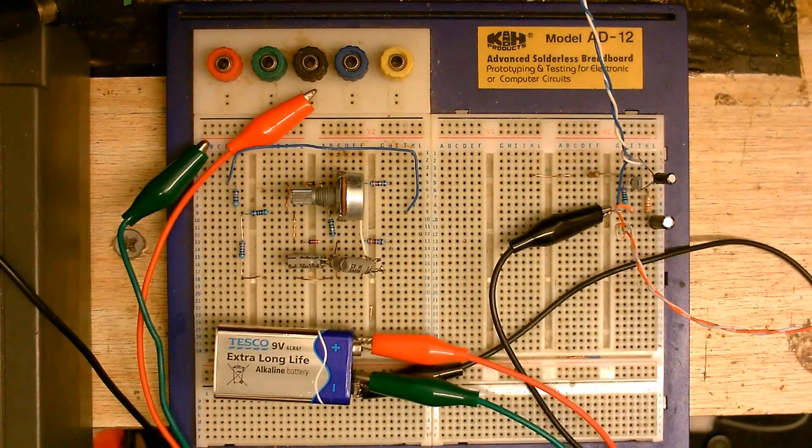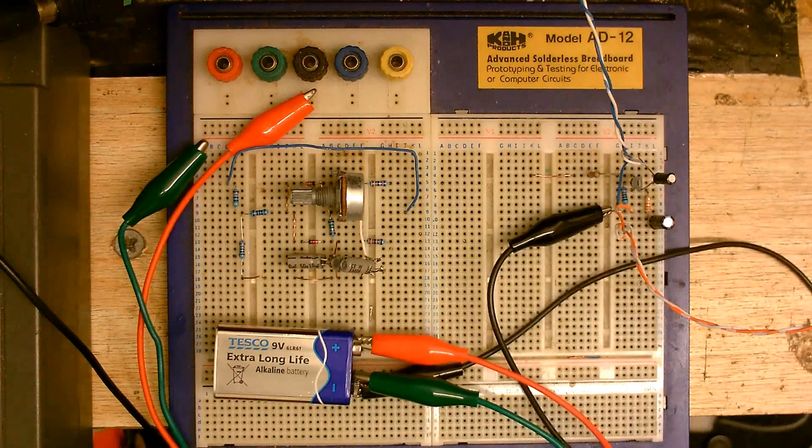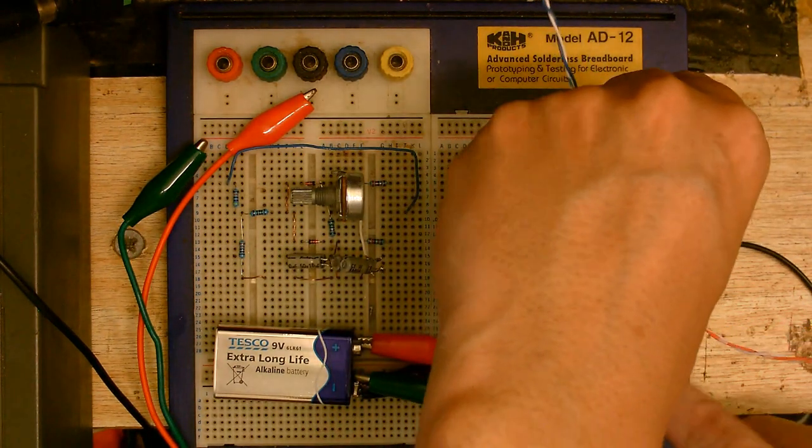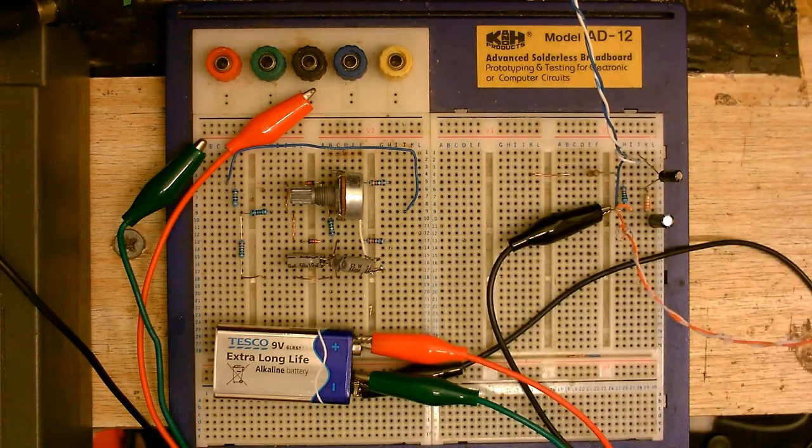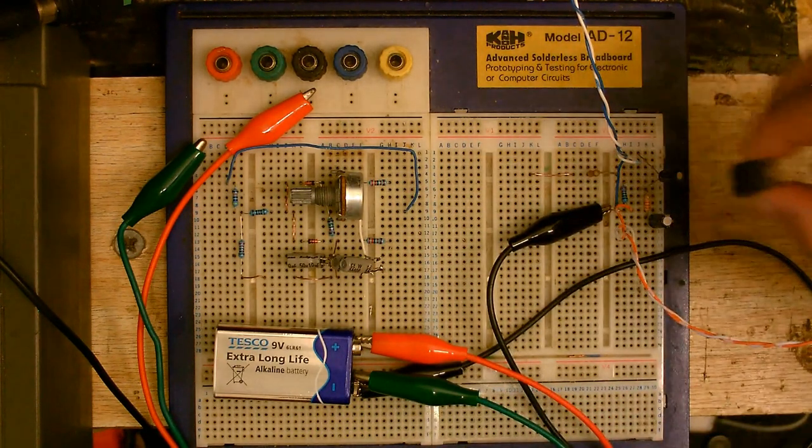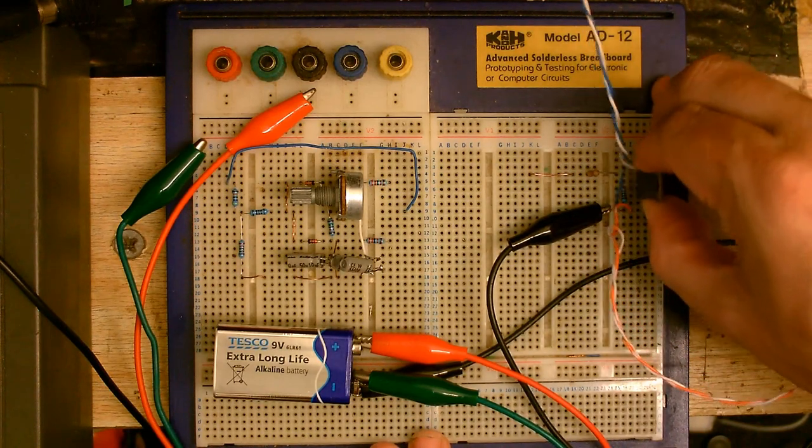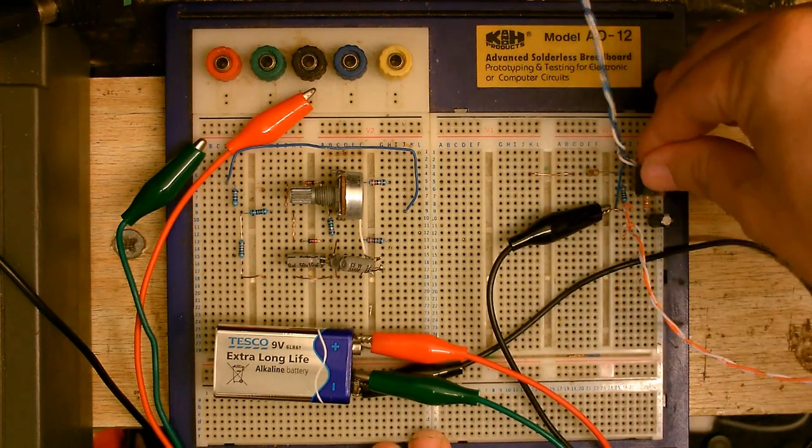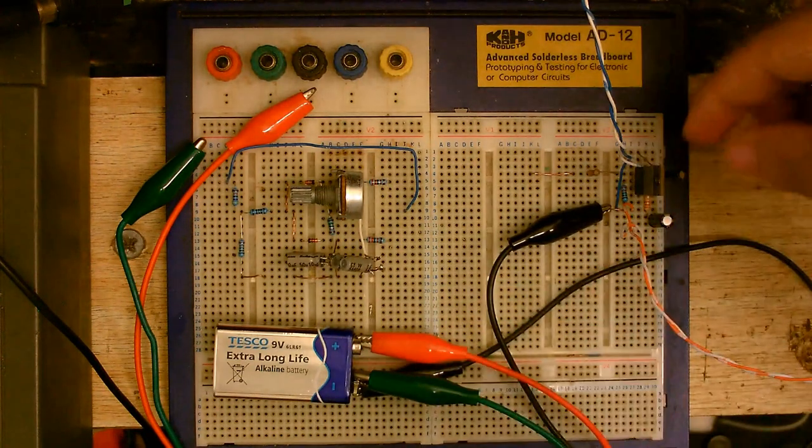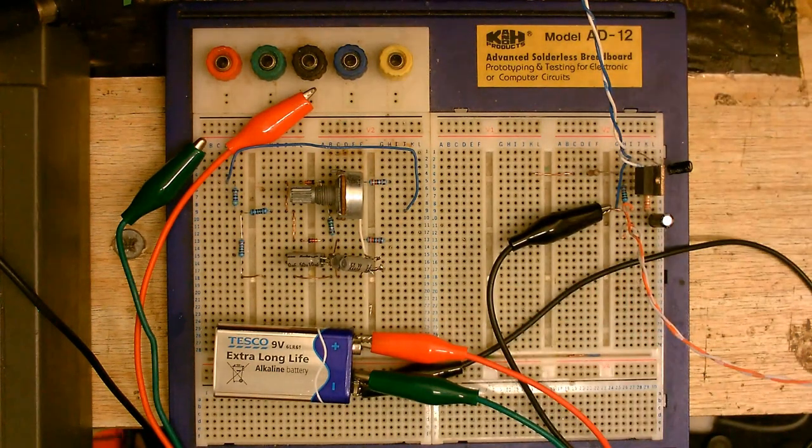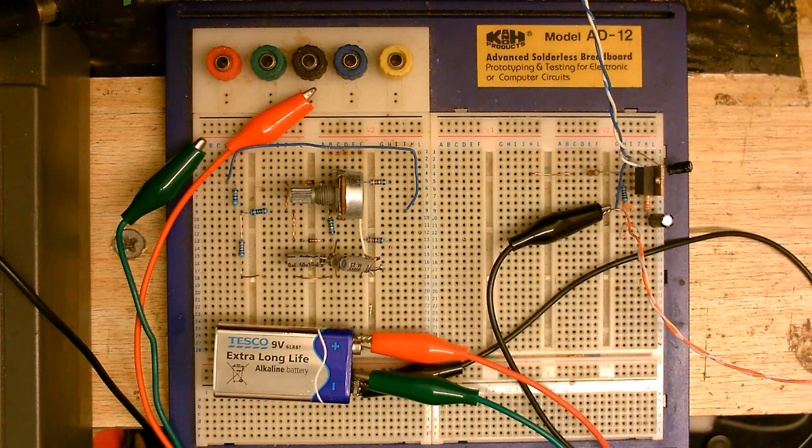If I connect the ground that might stop some of that gargling. No, it doesn't. Oh, that's interesting. OK. Let's just turn that off a minute. So I'm going to replace this with the MOSFET and see what happens.